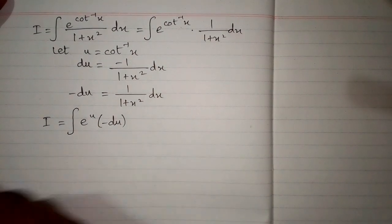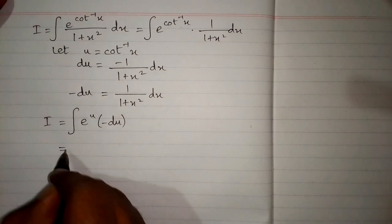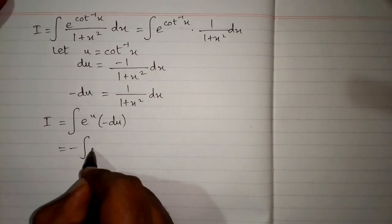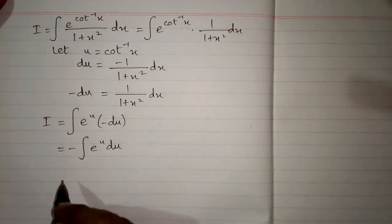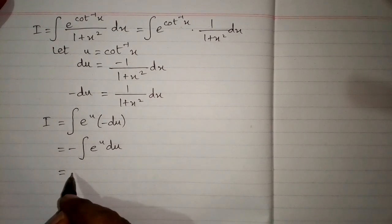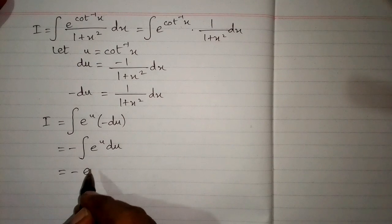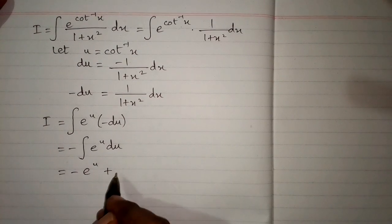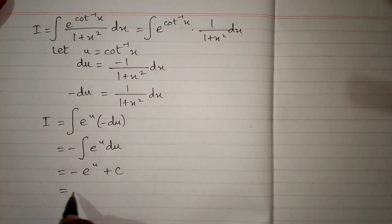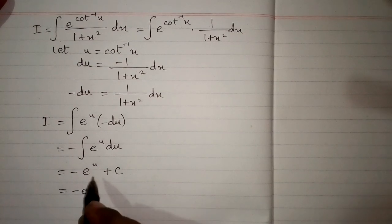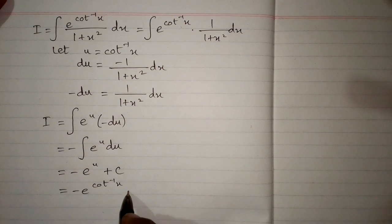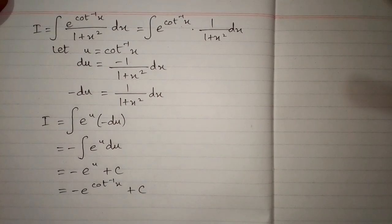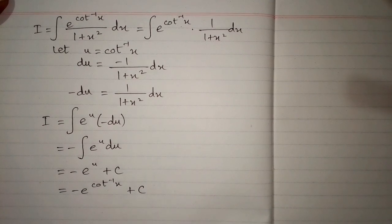The minus sign can be written before the integral sign, giving minus integral of e to the power u du. The integral of e to the power u is e to the power u plus c, where c is the constant of integration. Putting back the value of u, which is inverse cot of x, the required answer is minus e to the power inverse cot of x plus c.